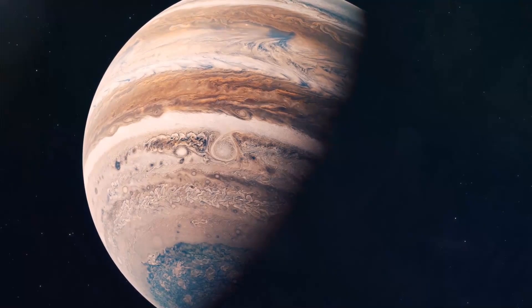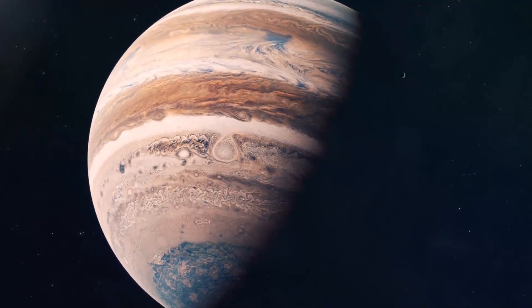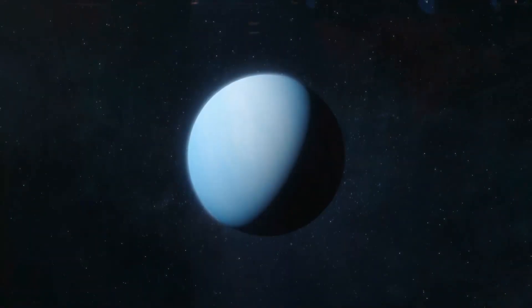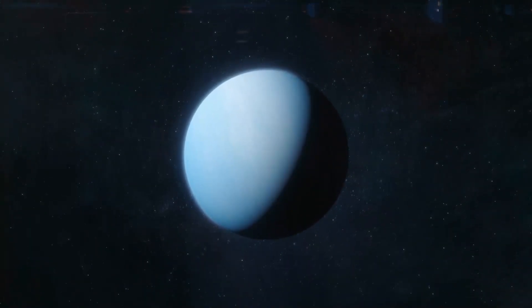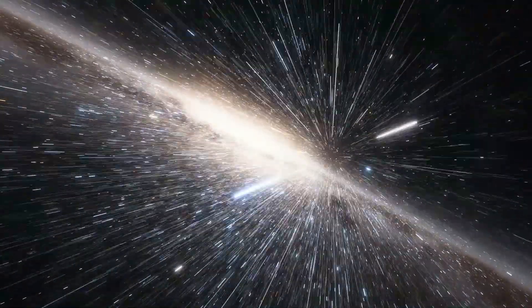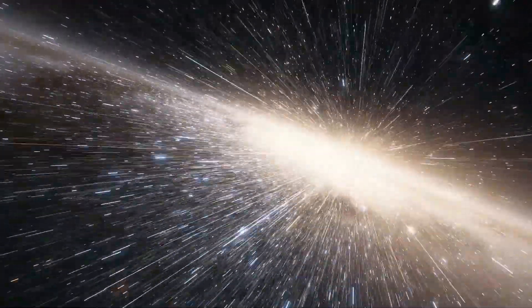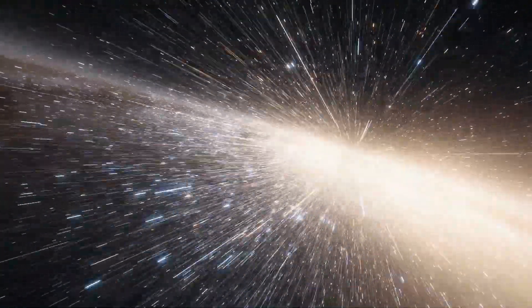At first, the mission was quite simple. Voyager 1 had to study the planetary systems of Jupiter and Saturn, and Voyager 2 had to study Uranus and Neptune. Currently, the Voyager space probes are exploring the outer boundary of the heliosphere in interstellar space.